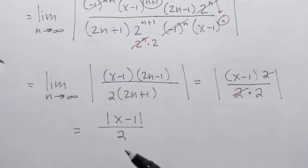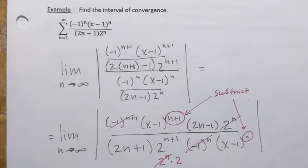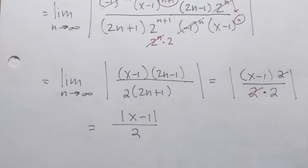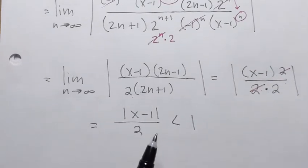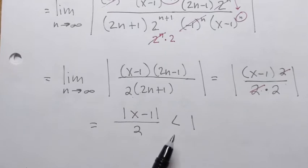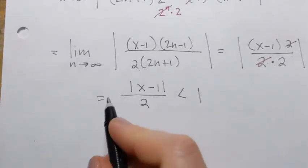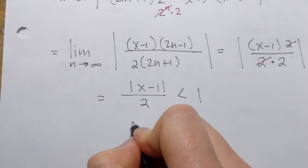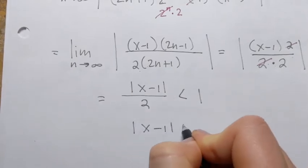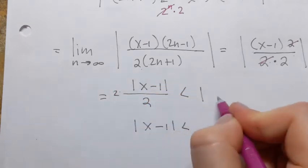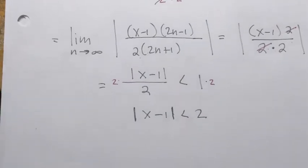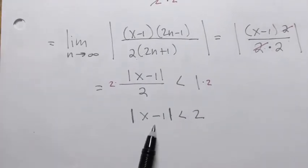Remember we were applying the ratio test. According to the ratio test, the series converges if this limit is less than 1. So the condition for convergence is absolute value of x minus 1 over 2, less than 1. Multiplying both sides by 2, we get absolute value of x minus 1 less than 2.